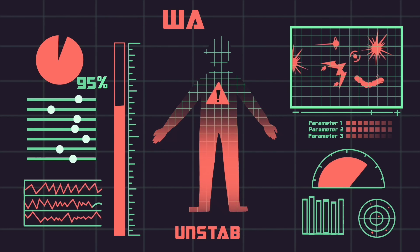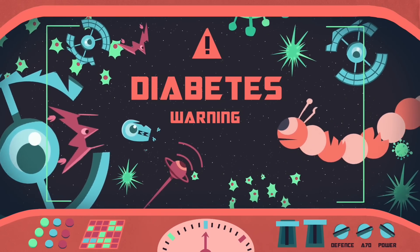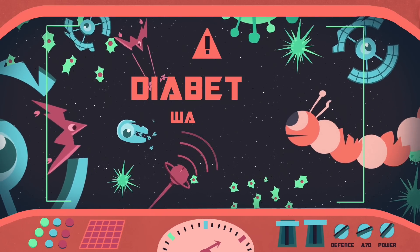A failure to maintain this balance can result in diseases caused by an aggravated immune response, like type one diabetes.